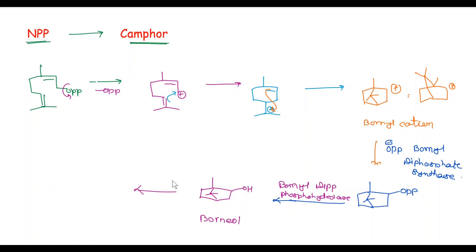In the next step, on oxidation, we get here carbon double bond oxygen, and this is called camphor. It may be written like that: here carbon double bond oxygen, here methyl, and here another two methyl groups.